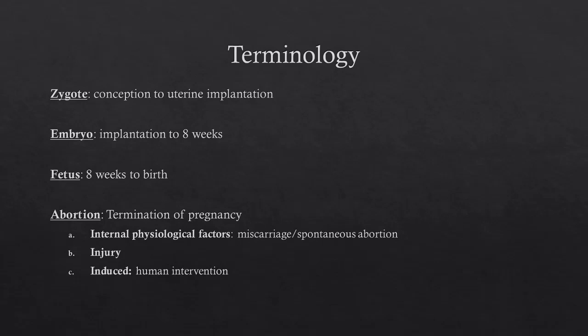A zygote is what you have from conception in the fallopian tubes, or in a dish, to the implantation in the uterus. An embryo is what you have from the point of implantation to about eight weeks of pregnancy. A fetus is what you have from eight weeks on until birth.